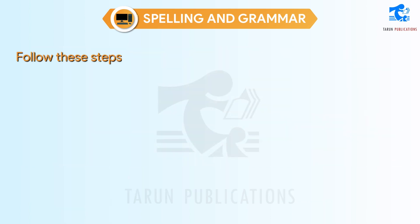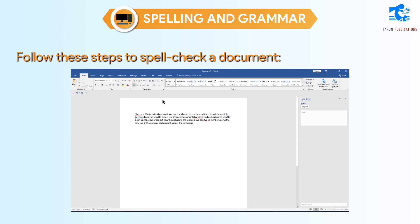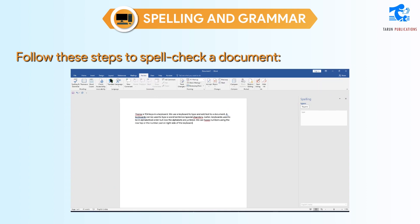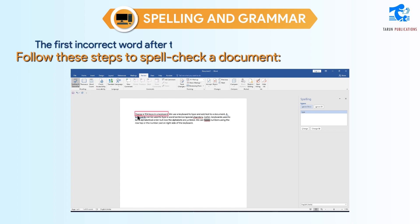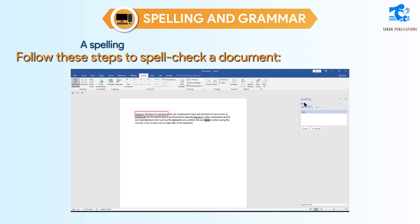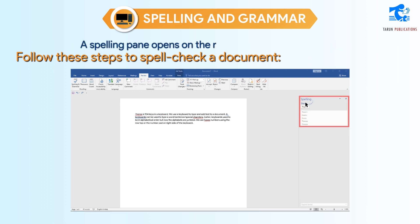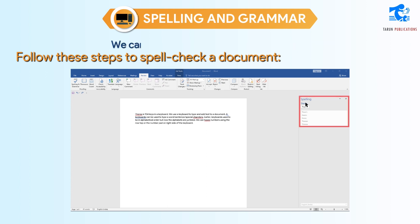Follow these steps to spellcheck a document. Step 1: Click on the Review tab. Step 2: Select the Spelling and Grammar tool in the Proofing group. The first incorrect word after the position of the cursor will be highlighted. A spelling pane opens on the right side of the window. We can perform the following functions.